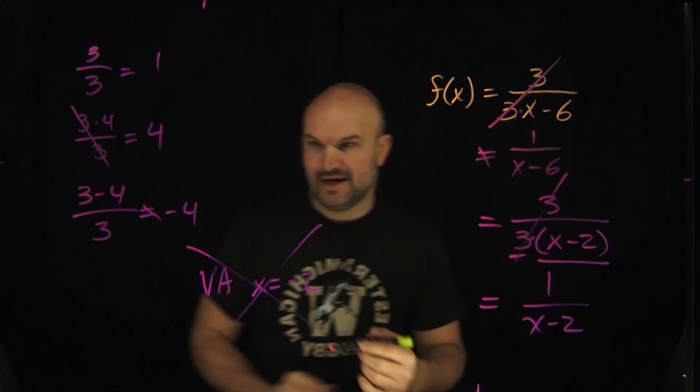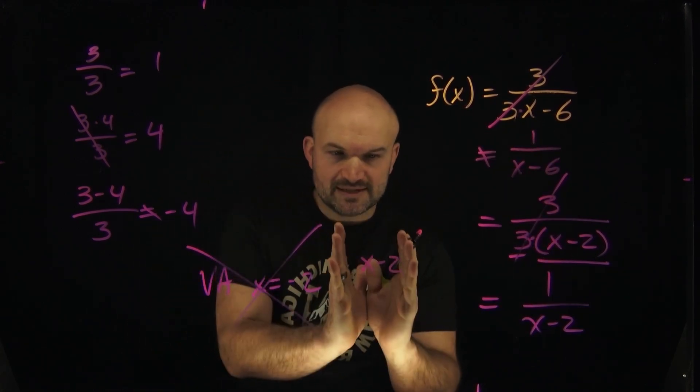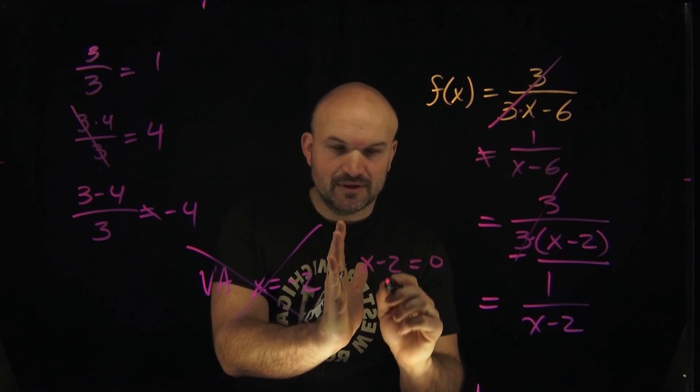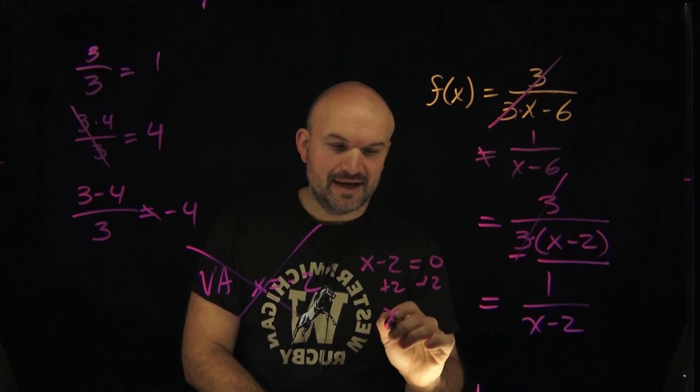So what number makes my denominator equal to zero? Well, you might be able to do this in your head, or you could also just set it equal to zero. We want to know when is my denominator equal to zero. So I just take my denominator, set it equal to zero, add 2 to both sides, and x is equal to 2.